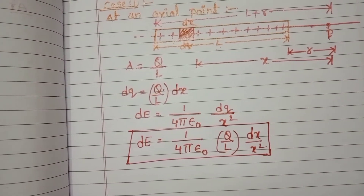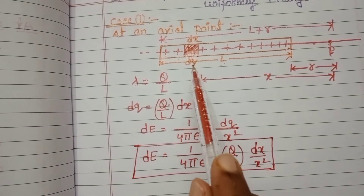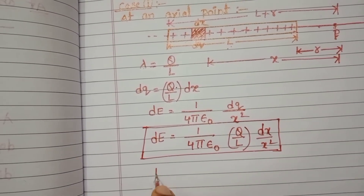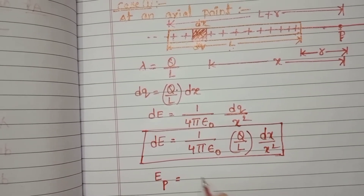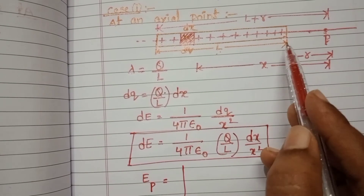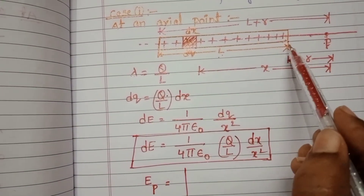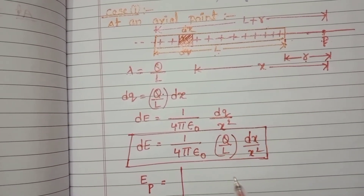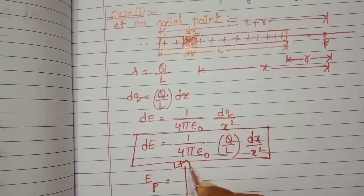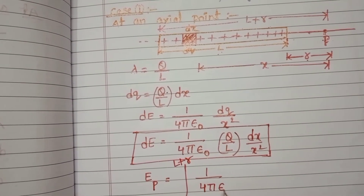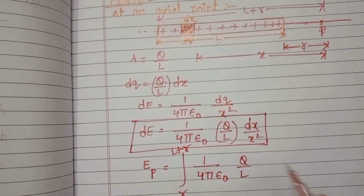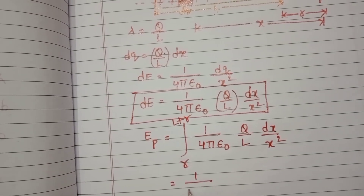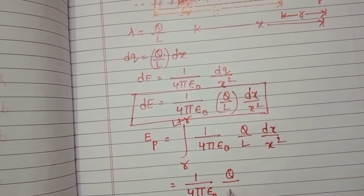To find the total intensity of electric field due to the uniformly charged rod, we take the integration. The limits are from R to L plus R — the near end of the rod is at distance R from point P, and the far end is at distance L plus R. So total E equals the integral from R to L plus R of 1 by 4 pi epsilon-zero into Q by L into DX by X squared. Here, 1 by 4 pi epsilon-zero and Q by L are constants.